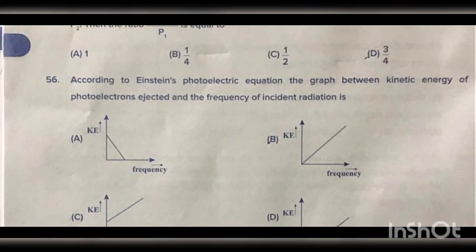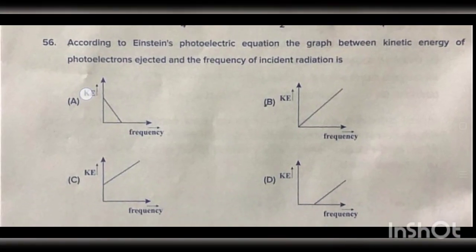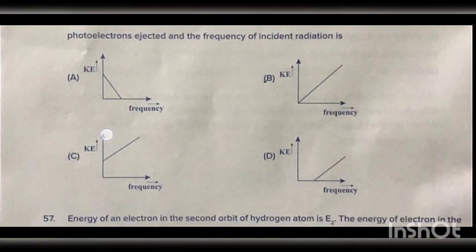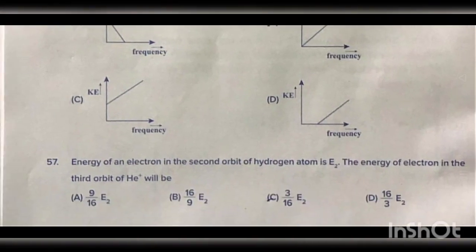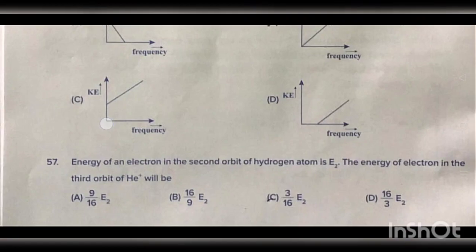According to Einstein's photoelectric equation, the graph between the kinetic energy of photoelectric electrons ejected and the frequency of incident radiation — the correct answer is option number C: kinetic energy versus frequency.